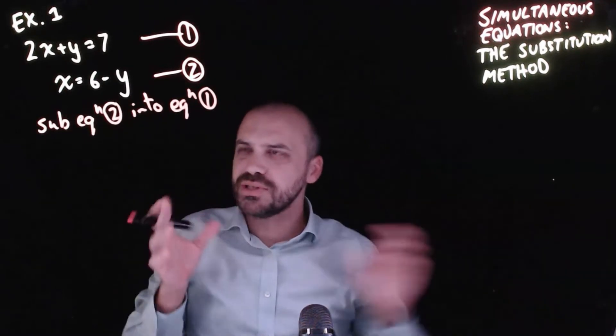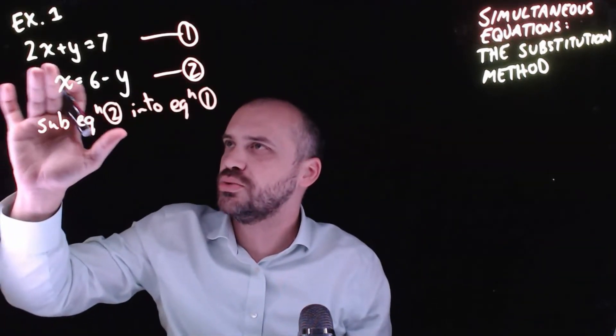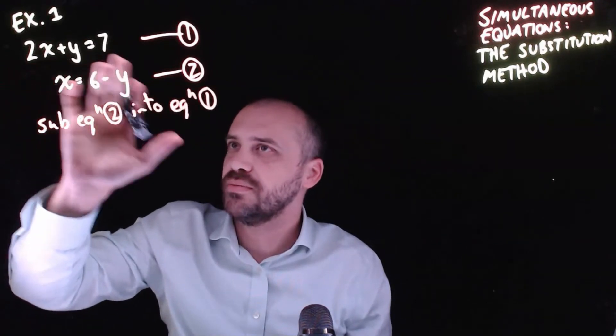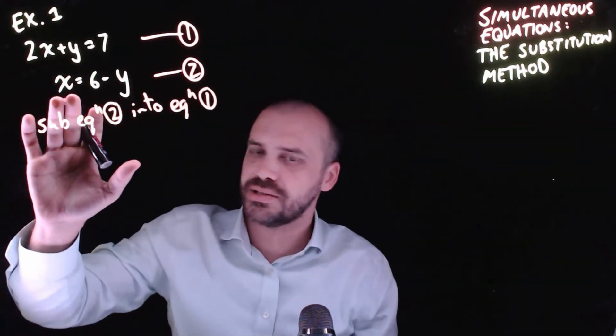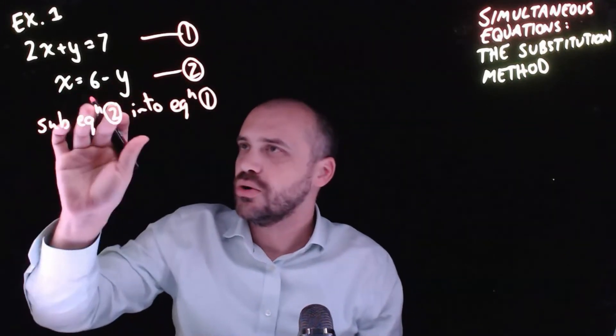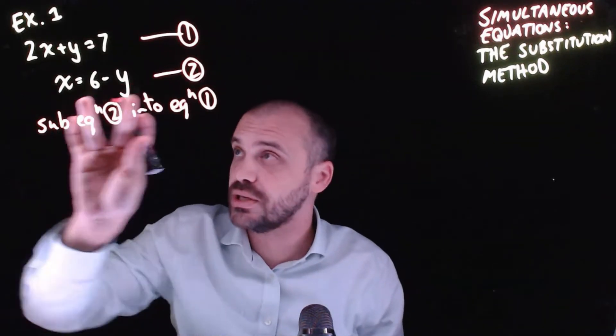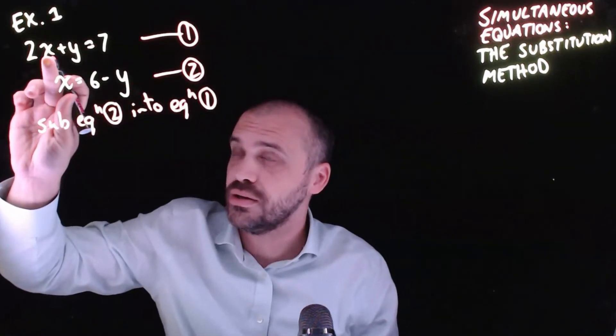All right, so what does that look like? Well, equation one is 2x + y = 7. Equation two says that x is equal to 6 - y.